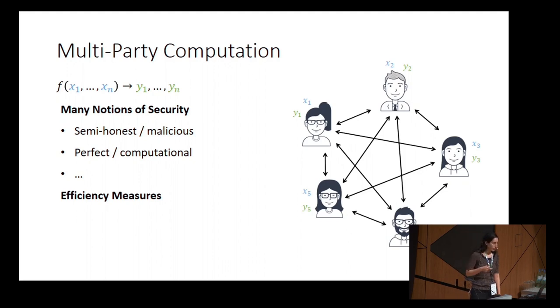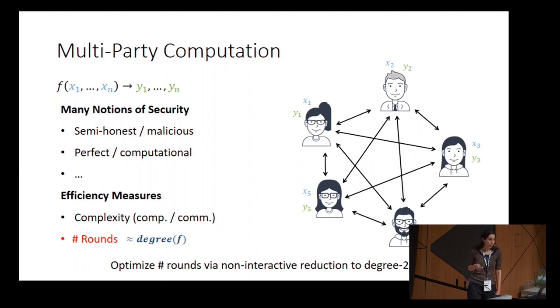You can also measure protocols according to their efficiency. You can consider the computational complexity and communication complexity of protocols, and also the number of rounds. In many classic results, the number of rounds is correlated with the degree of the function to be computed. Our goal in this work is to reduce the number of rounds in a generic way that is independent of the security notion.